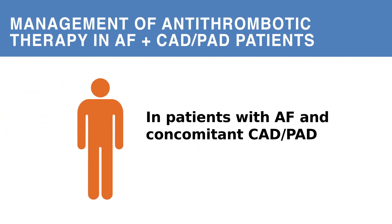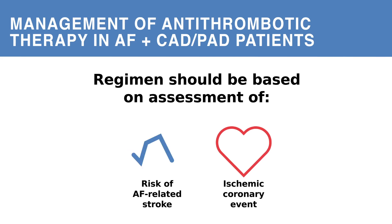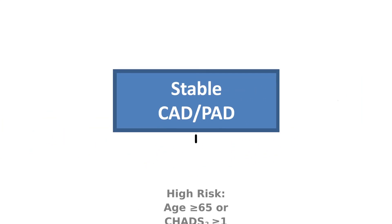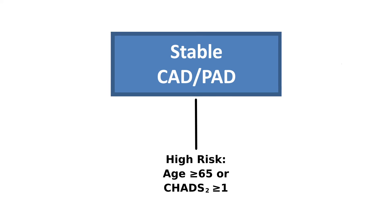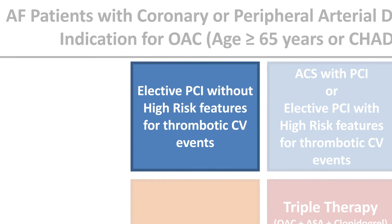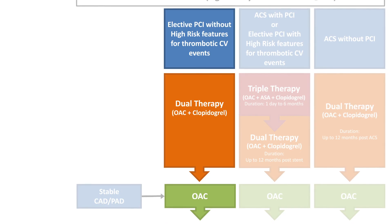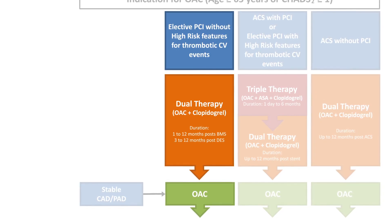In summary, in patients with AF and concomitant CAD or PAD, the choice of antithrombotic regimen should be based on a balanced assessment of a patient's risk of AF-related stroke, ischemic coronary event, and clinically relevant bleeding. Patients with AF and CAD at high risk of stroke — aged 65 and older or with a CHADS2 score of 1 or higher — should be treated with oral anticoagulation therapy. Most patients with an indication for OAC in the presence of CAD should receive a NOAC in preference to warfarin. AF patients undergoing elective PCI without high-risk thrombotic features should receive dual pathway therapy of OAC plus clopidogrel for at least one month after bare metal stent and at least three months after drug-eluting stent implantation.